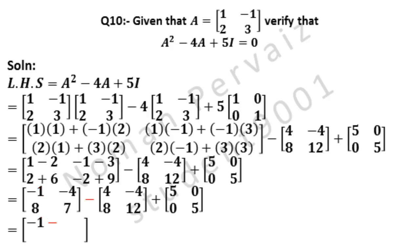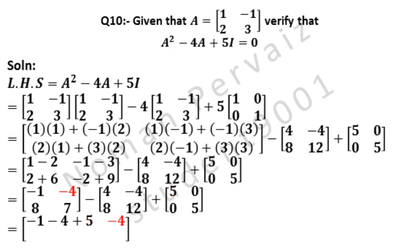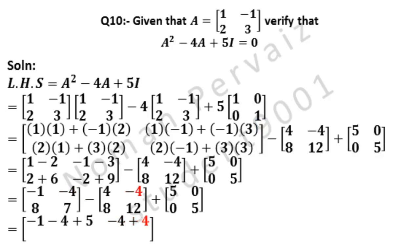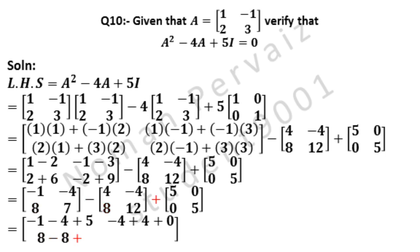These two matrices come without any change. We write minus 1 from first matrix, then minus is written, 4 from second matrix, plus is written, then 5 from third matrix. Here write minus 4 from first matrix. Minus minus is plus. 4 is written. Plus is written, then 0 from third matrix. Here we write 8 from first matrix, then minus is written, 8 from second matrix, plus is written, then 0 from third matrix.